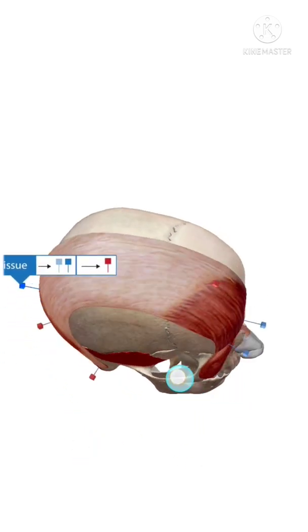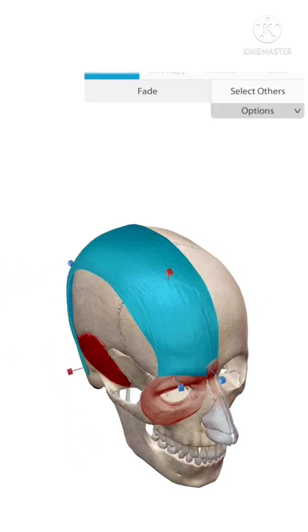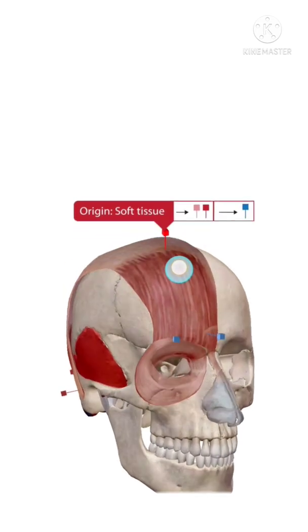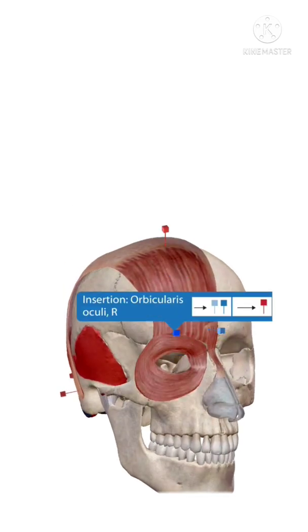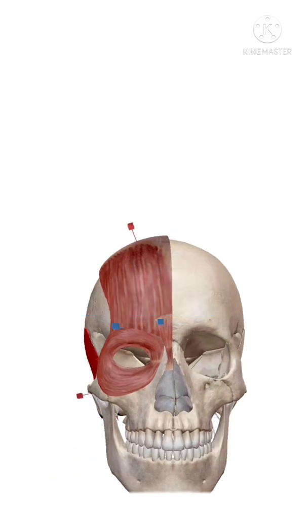The aponeurosis continues, and again your muscle is originated from the soft tissue and inserted in your procerus muscle and your orbicularis oculi. These are the two muscles which are present in your frontal bone.